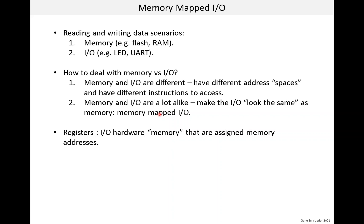There is a term that helps a little: for I/O, the term 'register' is often used to identify the thing you are reading and writing. So a UART will have a number of registers, each with its own memory address. You might write a register to set the baud rate of the UART, and you might read a register to get the data received by the UART over the serial line.